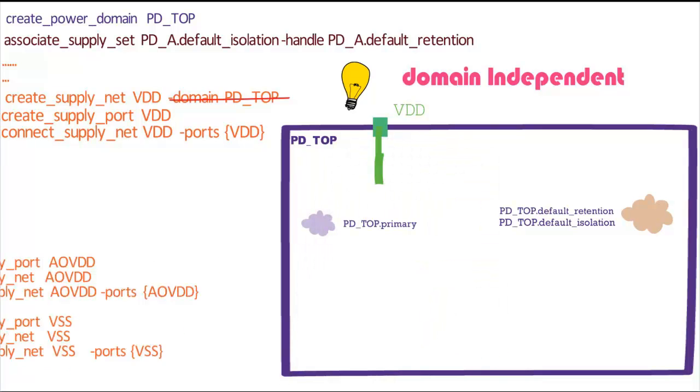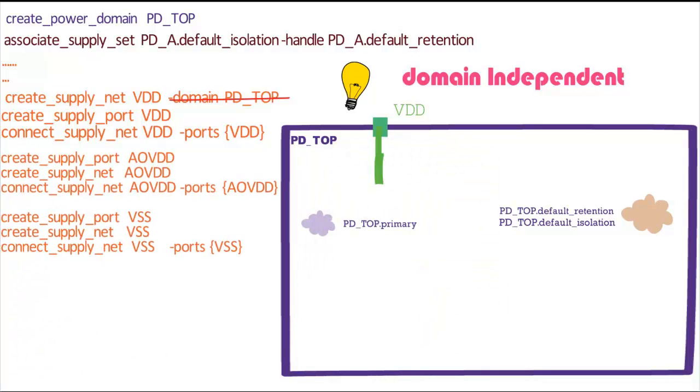We do the same thing for AOVDD by creating net, port, and connecting them, and similarly for VSS.